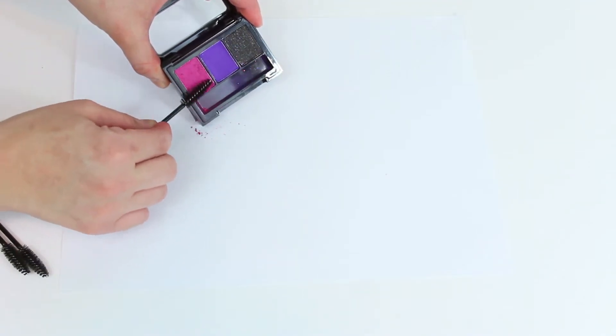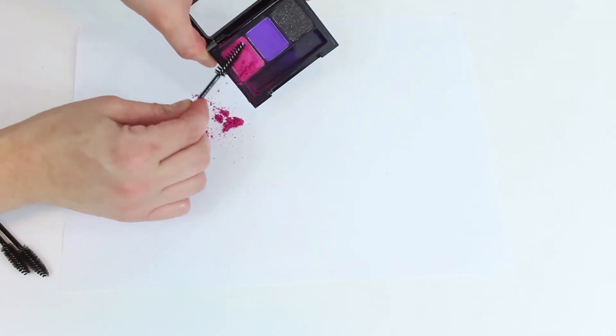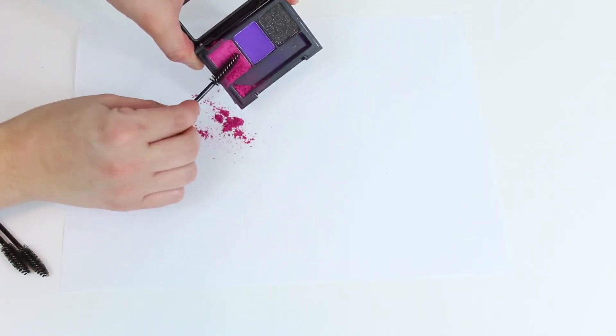Begin by scraping the mascara wand over the shadow surface and onto a piece of paper. Go a little overboard—you will use more pigment than you think.